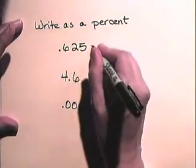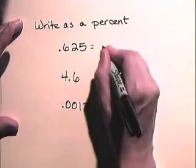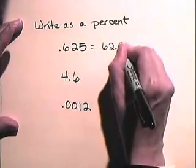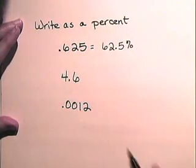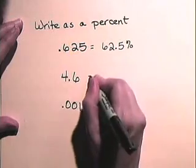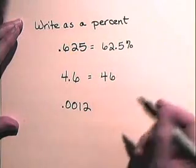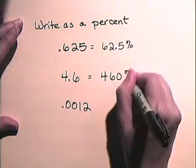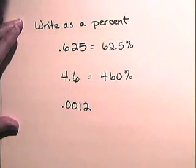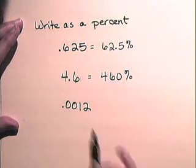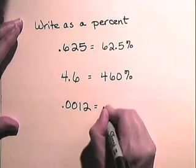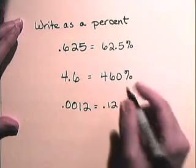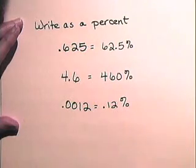So 0.625 — move the decimal two places to the right and attach a percent sign — becomes 62.5%. For 4.6, we move the decimal two places to the right, which necessitates adding a zero, and attach a percent sign, so that becomes 460%. And 0.0012 — we move the decimal two places to the right — so this becomes 0.12, or twelve one-hundredths of one percent.